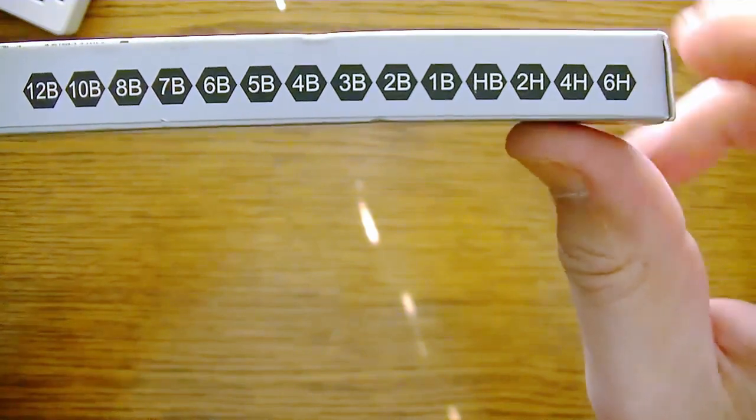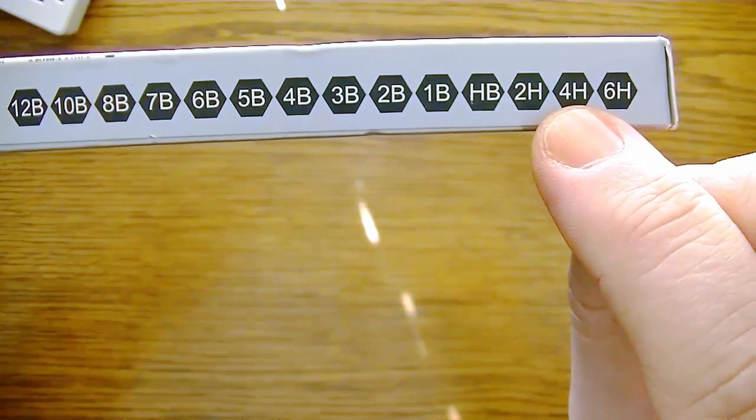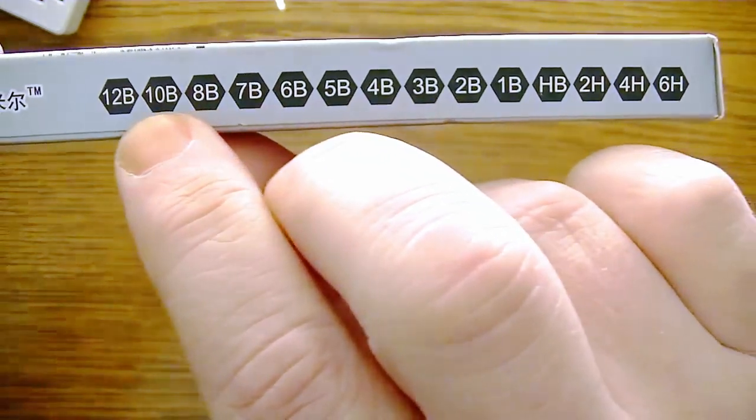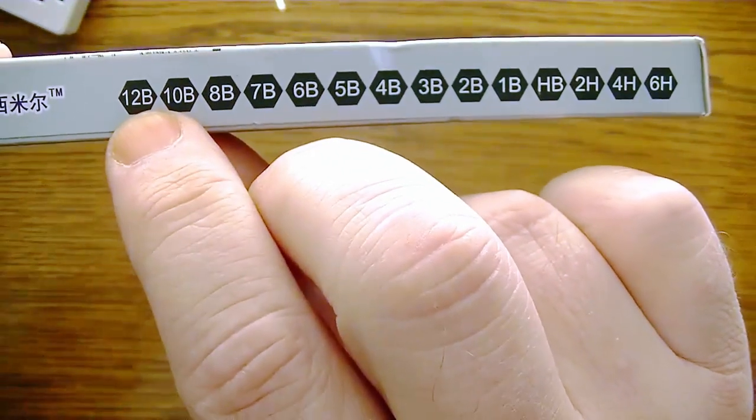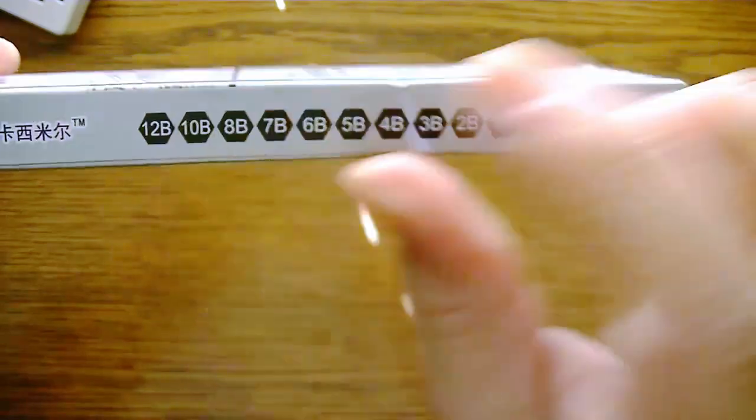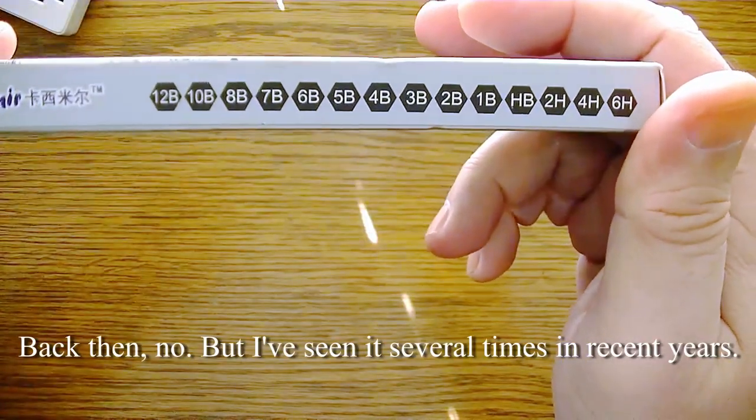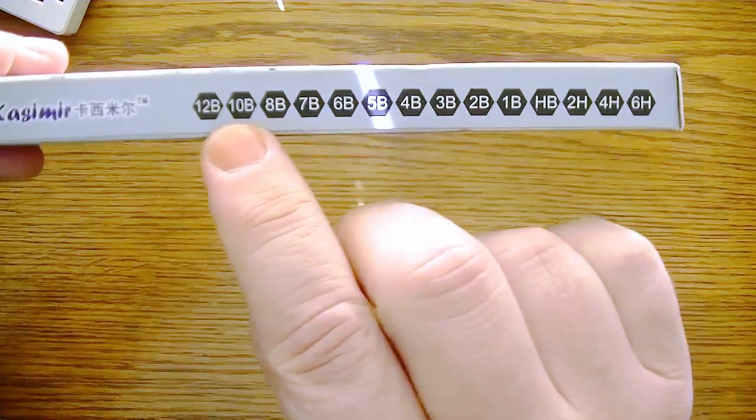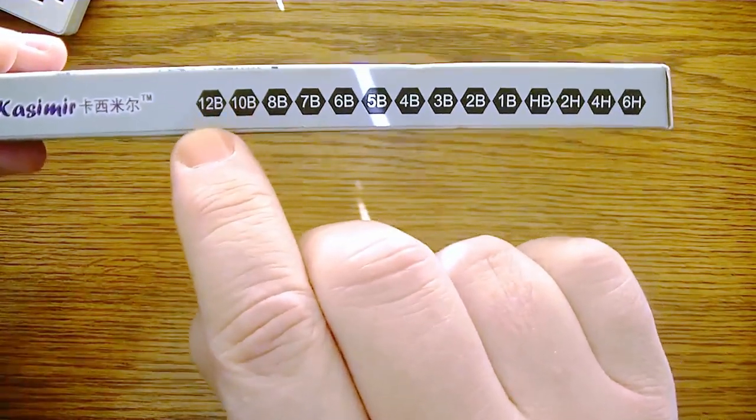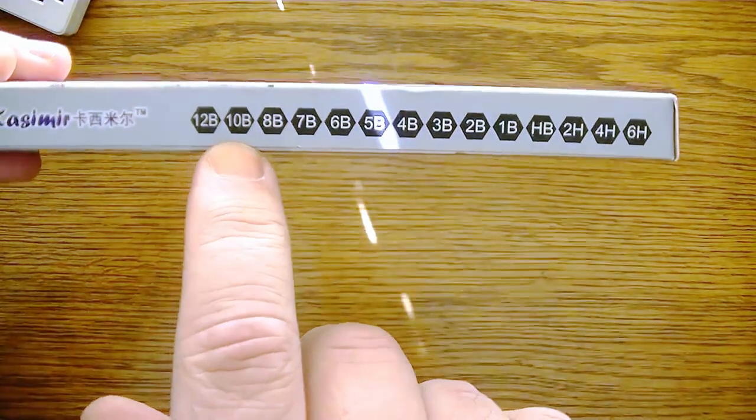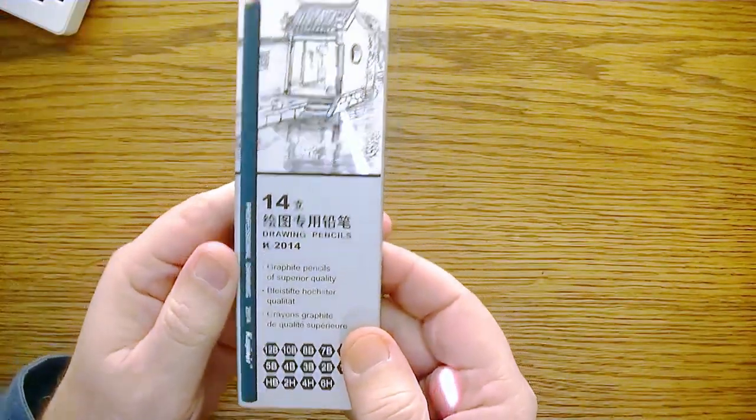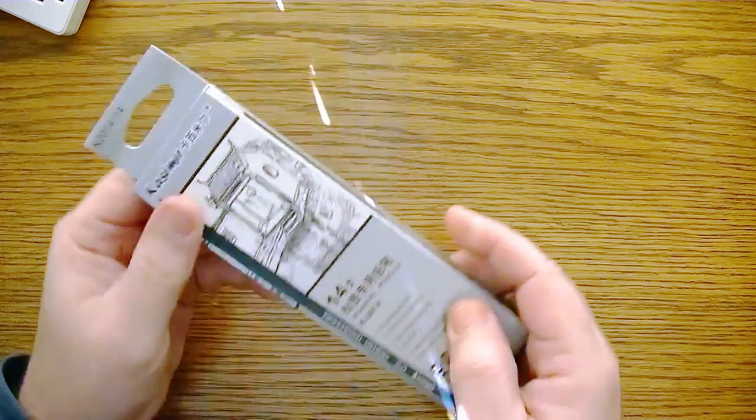There's 14 K-2014 graphite pencils of superior quality professional drawing. Here's what we're supposed to be getting: 6H all the way to 12B. Wow, I've never seen a 12B before, really. It skips over 9 and 11. I mean I've seen on rare occasion 10B, but I've never seen a 12B.